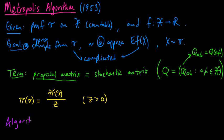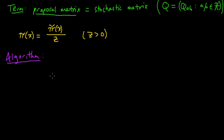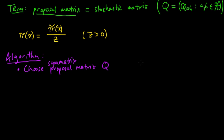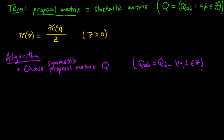With that introductory material out of the way, here is the Metropolis algorithm. First, you choose a proposal matrix Q, and you choose Q to be a symmetric matrix. This is one thing that is special about the Metropolis algorithm — as opposed to the Metropolis-Hastings generalization, in which Q doesn't have to be symmetric, for Metropolis it does. So Q is symmetric.